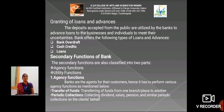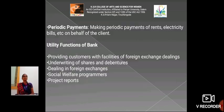The first secondary function is agency functions. Banks are agents for their customers, and hence they perform various agency functions, including: transfer of funds — transferring funds from one branch to another; periodic collection — collection of dividends, salary, pensions, etc.; and periodic payment — making periodic payments of rents, electricity bills, etc.